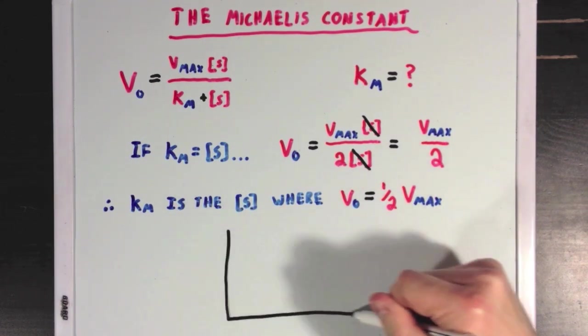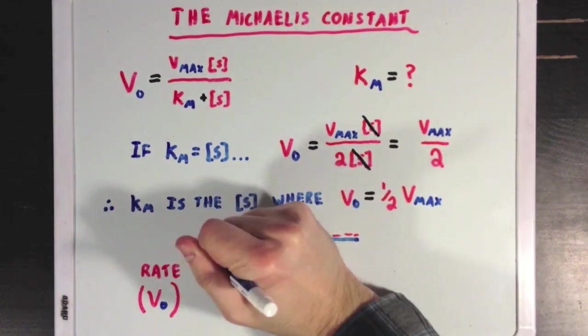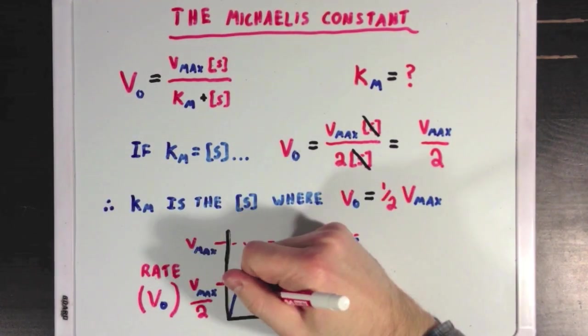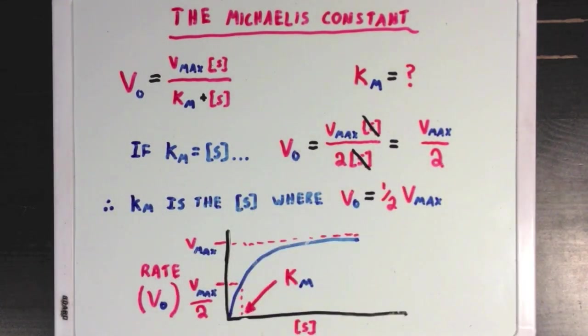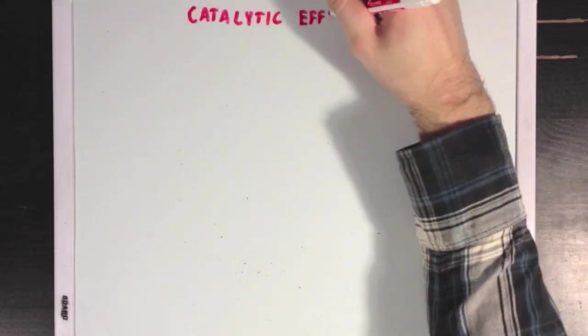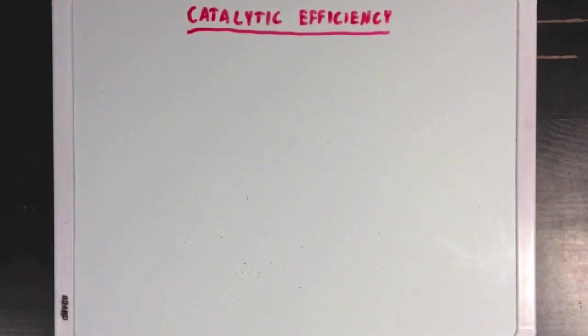And if we look at that on a graph from before, you'd see that Km is a substrate concentration specific to our circumstances, where our rate is at half of its max, and the lower our Km, the better our enzyme is at working when substrate concentrations are small. And we can use this Km term to quantify an enzyme's ability to catalyze reactions, which we call catalytic efficiency.